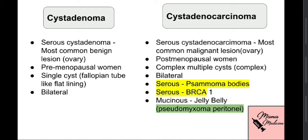Another high-yield fact about mucinous cyst adenocarcinoma is that it is related to forming 'jelly belly,' also known as pseudomyxoma peritonei — the formation of myxomatous (jelly-like or gelatinous) material in the peritoneum due to mucinous cyst adenocarcinoma.